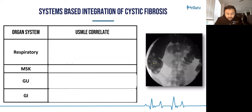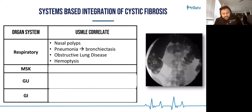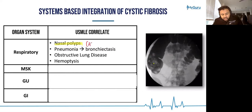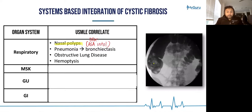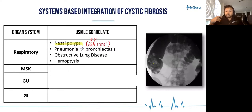From a respiratory standpoint, these patients are going to have bilateral nasal polyps — the differential includes aspirin-intolerant asthma, which also presents with nasal polyps. Pneumonia can cause a breakdown of the basement membrane epithelium, leading to bronchiectasis, which can produce obstructive lung disease. You can also get hemoptysis, because the lung tissue becomes friable such that a forceful cough can pop open blood vessels.